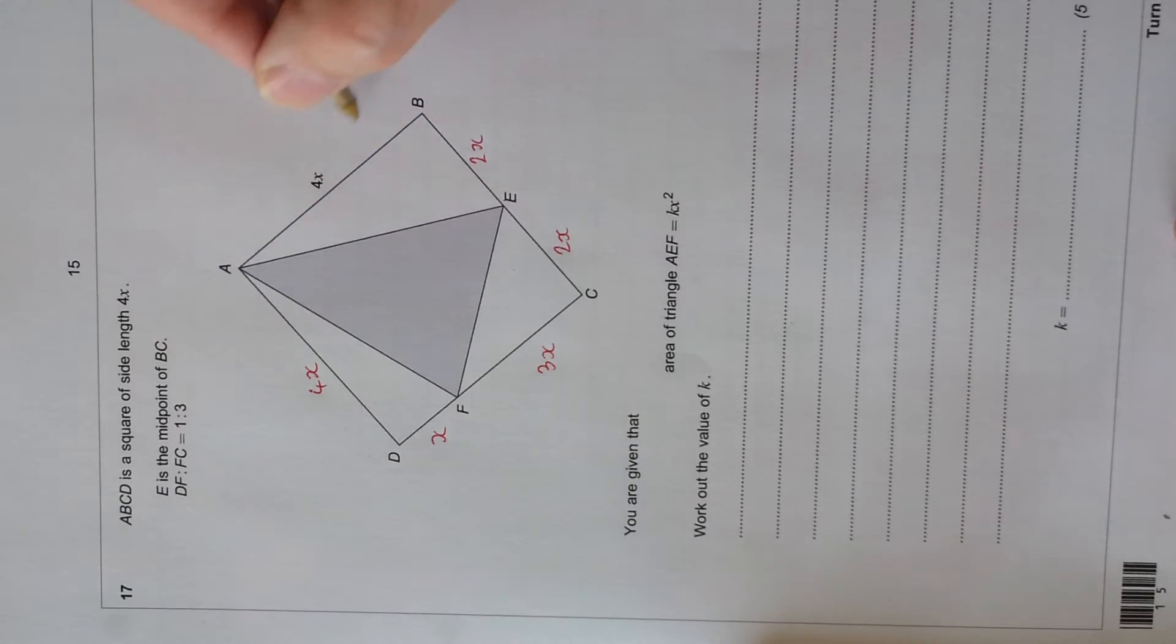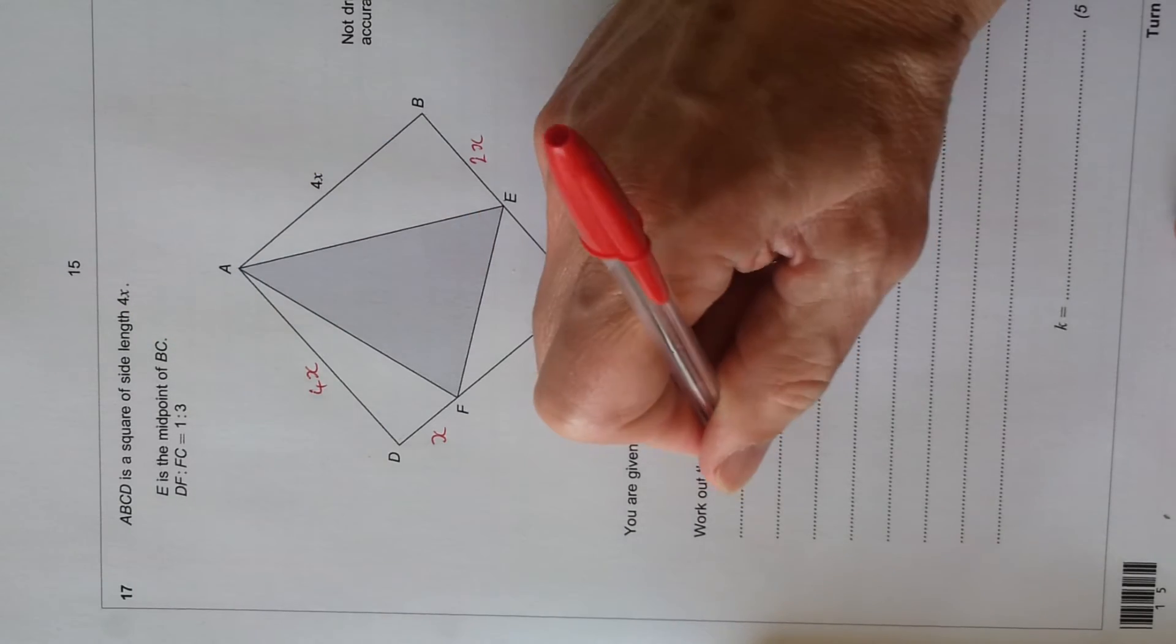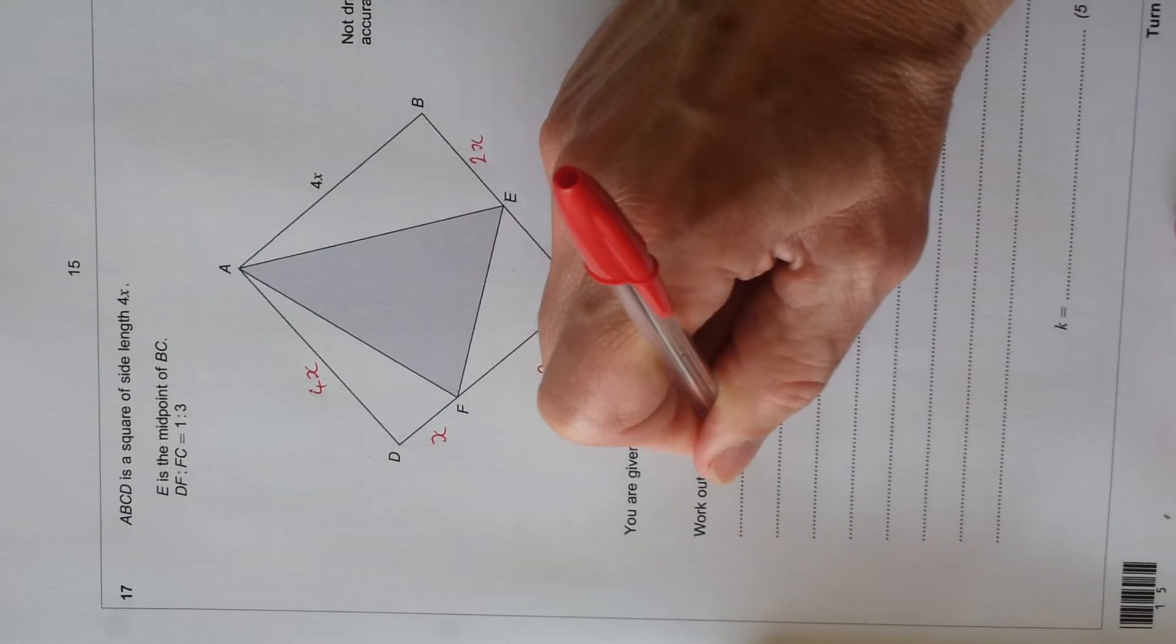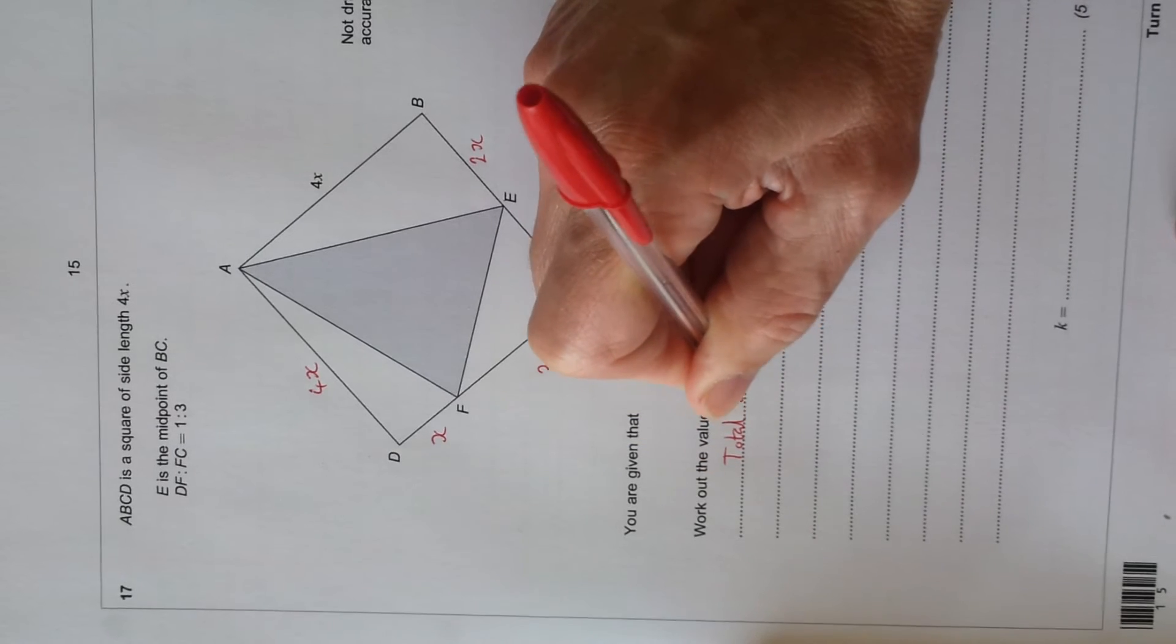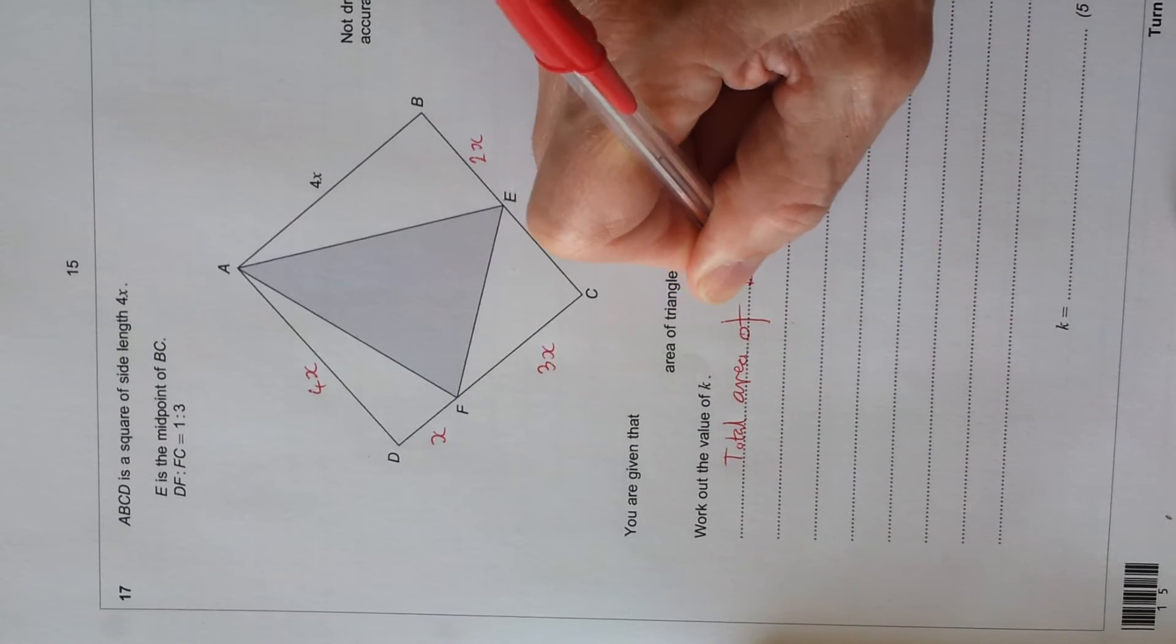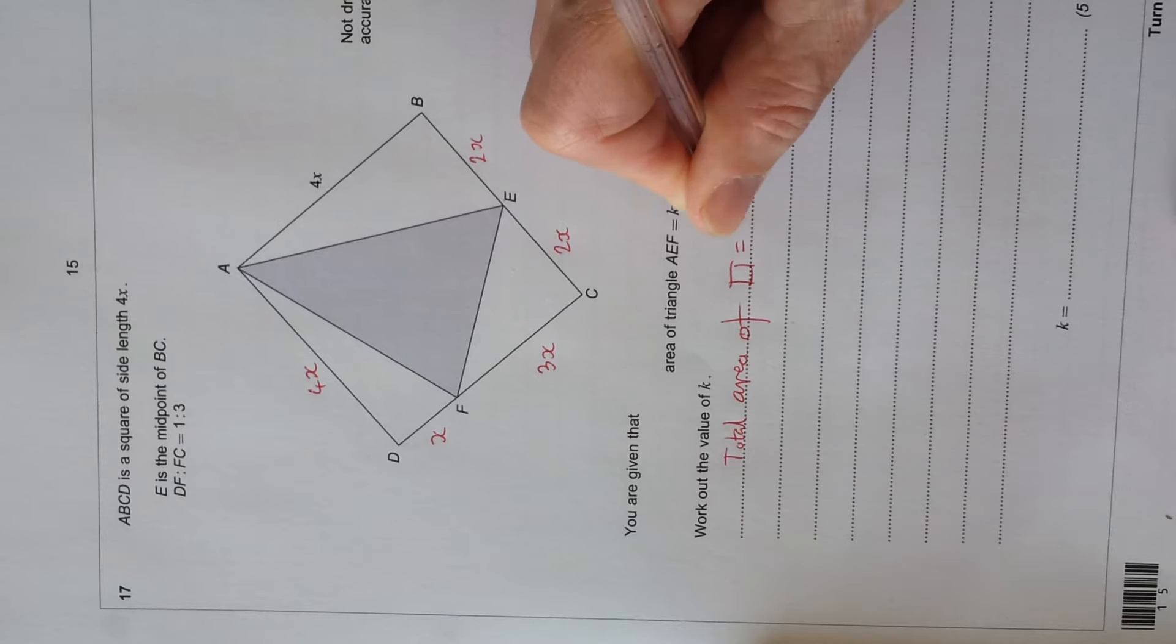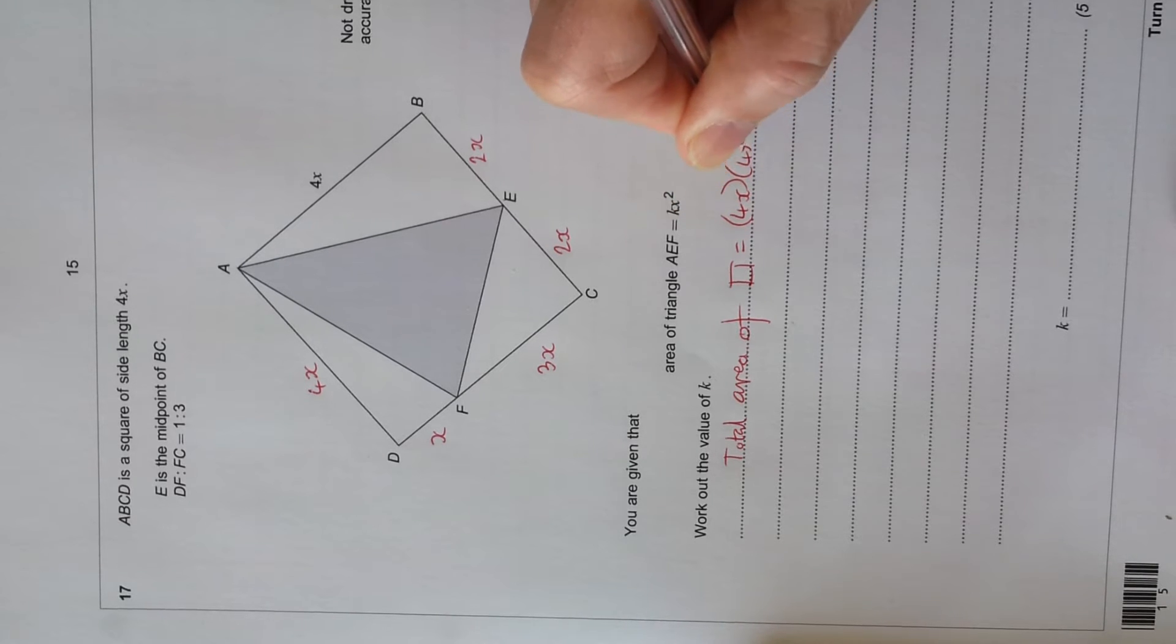So the whole area of the square is 4x times 4x, and the total area of square equals 4x times 4x, which is 16x squared.